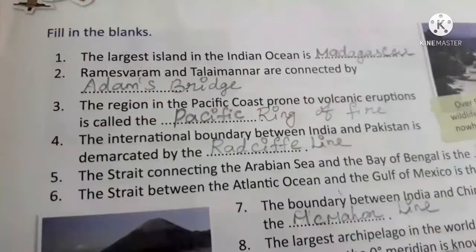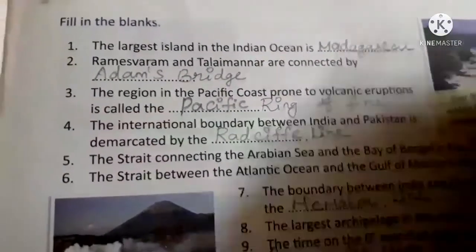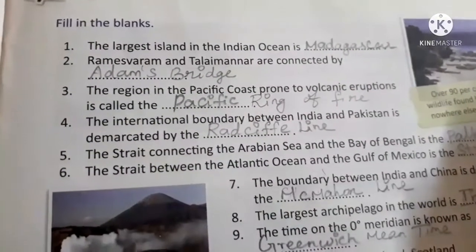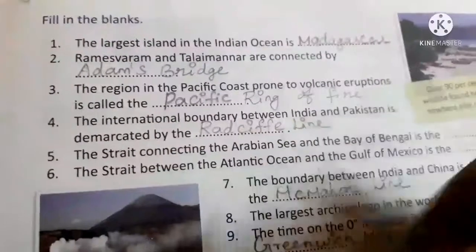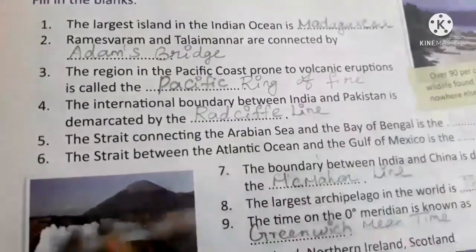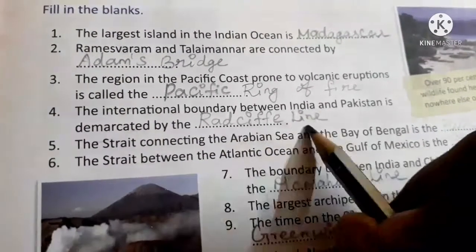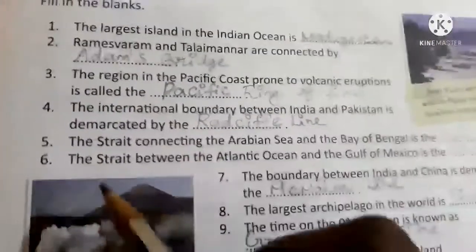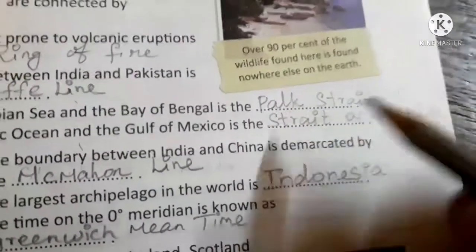The region on the Pacific coast prone to volcanic eruptions is called the Pacific Ring of Fire. The international boundary between India and Pakistan is demarcated by the Radcliffe Line (R-A-D-C-L-I-F-F-E L-I-N-E).